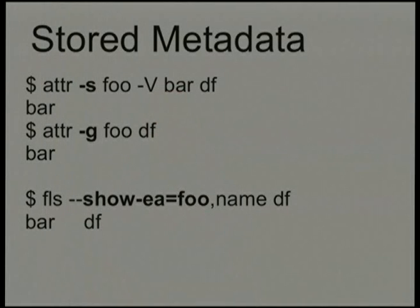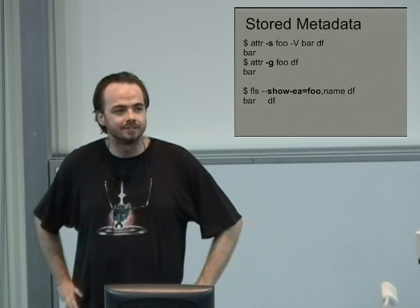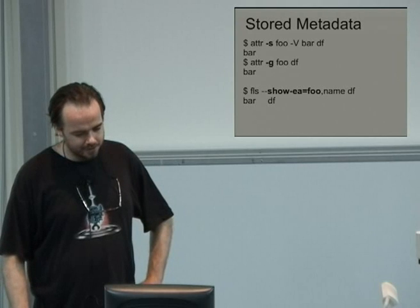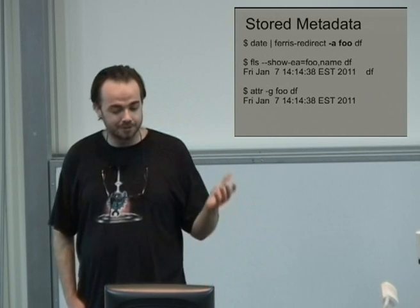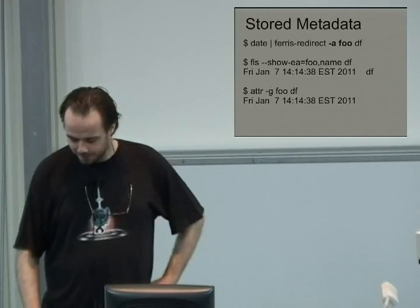Stored metadata can be done through RDF or through the kernel's native extended attribute interface. If you use the 'attr' command to set a particular attribute and then use Ferris LS, the foo attribute just shows up like any other extended attribute. Using the Ferris redirect command with the minus-A flag, instead of writing the contents of a file, you update a particular attribute — and you can again use the native kernel attr command to grab the foo attribute and see it's been updated.